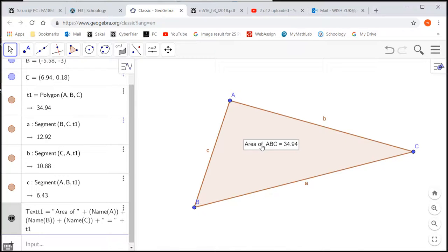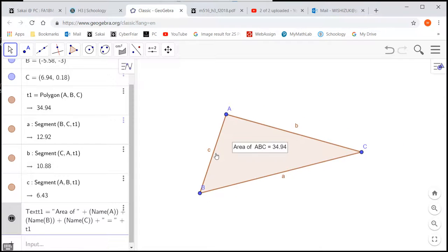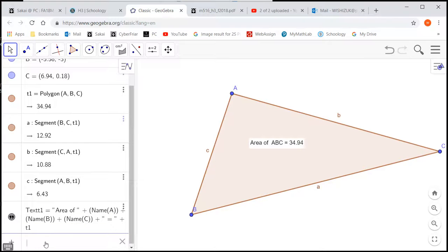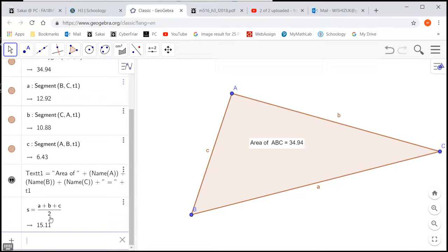So let's use Heron's formula to find the area. First, we need to find s. s is simply a plus b plus c divided by 2. Hit enter, and we got that.